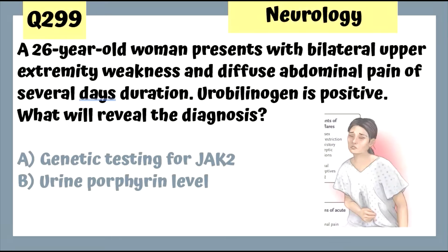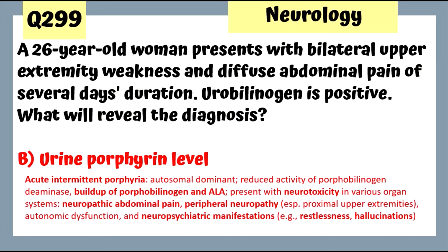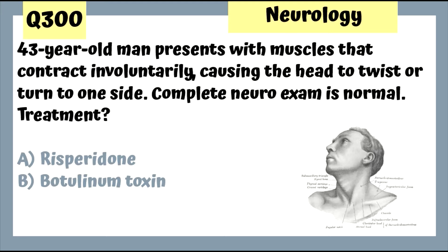Question 299: A 26-year-old woman with bilateral upper extremity weakness and diffuse abdominal pain; urobilinogen is positive. This is a heme-synthesis defect — intermittent porphyria, an autosomal abdominal condition. It leads to neuropathic abdominal pain, peripheral neuropathy, and neuropsychiatric manifestations such as restlessness and hallucinations. Lab values show a buildup of porphobilinogen and ALA.